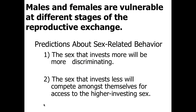Males and females are going to be vulnerable at different stages, and that will also influence how they behave. Generally, the sex that is investing a greater amount will be more discriminating and choosy, working harder to ensure they're getting the best mate. Whereas the sex that invests less tends to not care as much about which mate they find, but will have as many mates as possible and will compete with others of their sex — generally other males — to get access to females.